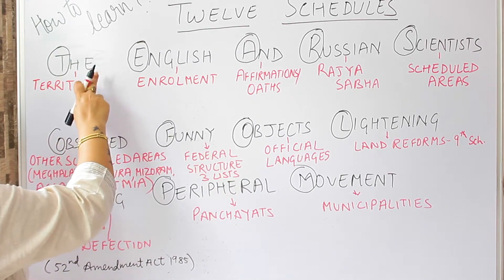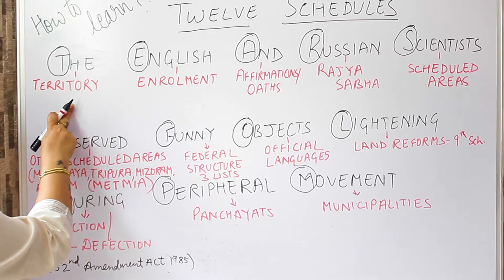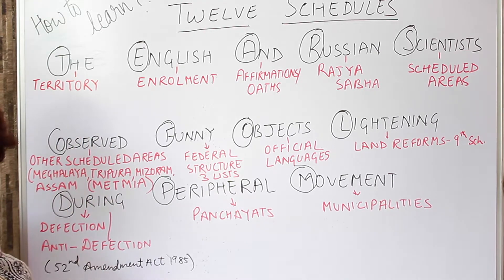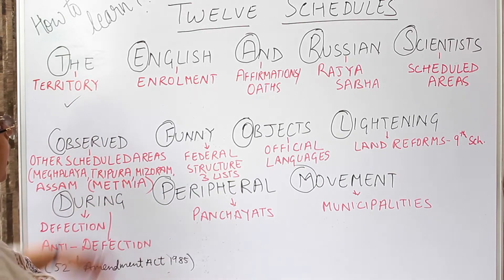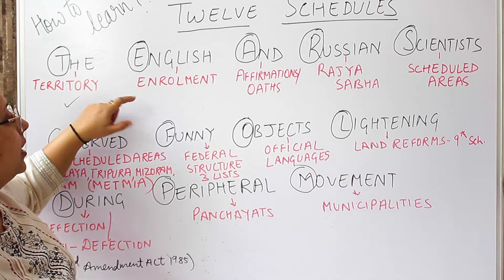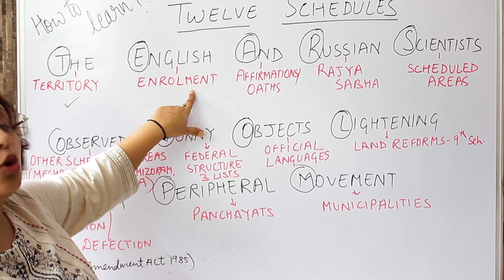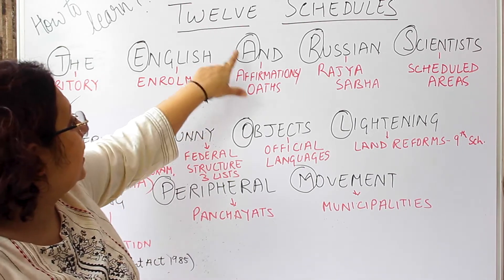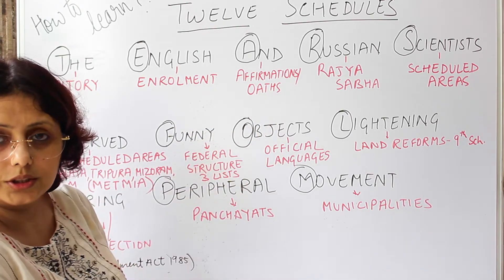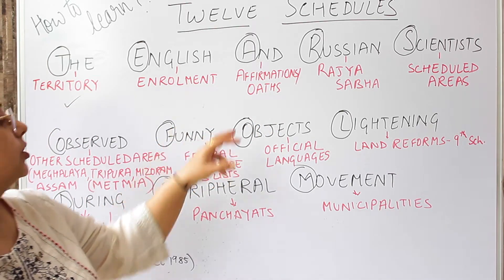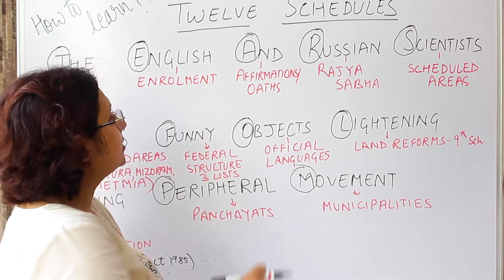The very first word is 'The' — we take T, and the 1st schedule is regarding Territories. The second word is 'English' — we take E, and the 2nd schedule is regarding Enrolment. The third word is 'Russian' — we take R... wait, the 3rd schedule is about Affirmations and Oaths. So from the letter A we map it to Affirmations.